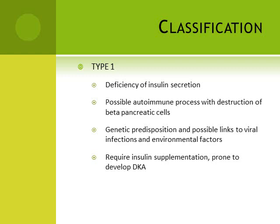Type 1 diabetes is due to deficiency of insulin secretion caused by destruction of the beta cells which are responsible for insulin production. The mechanism behind this is a possible autoimmune process with destruction of pancreatic beta cells, genetic predisposition, and possible links to viral infections and environmental factors. The patient requires insulin supplementation and is prone to develop diabetic ketoacidosis, which is pathognomonic of the disease — if a patient develops DKA, the chances are high that they have type 1 diabetes.